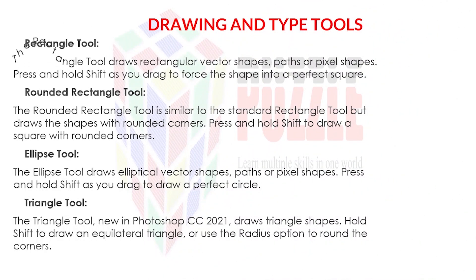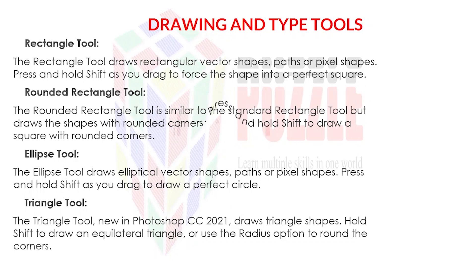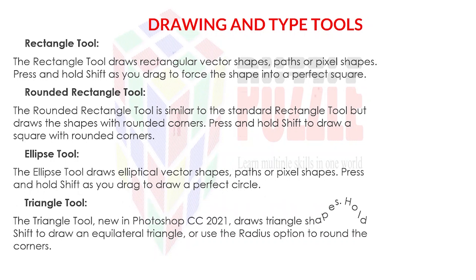Rectangle tool: draws rectangular vector shapes, paths, or pixel shapes. Press and hold Shift as you drag to force the shape into a perfect square. Rounded rectangle tool: similar to the standard rectangle tool but draws shapes with rounded corners — press and hold Shift to draw a square with rounded corners. Ellipse tool: draws elliptical vector shapes, paths, or pixel shapes — press and hold Shift to draw a perfect circle. Triangle tool, new in Photoshop CC 2021: draws triangle shapes — hold Shift to draw an equilateral triangle, or use the radius option to round the corners.